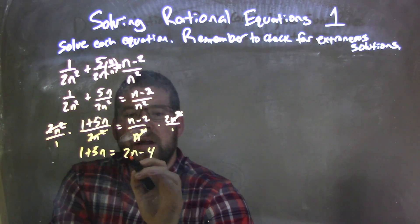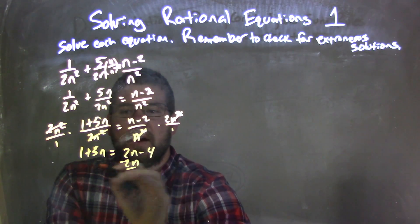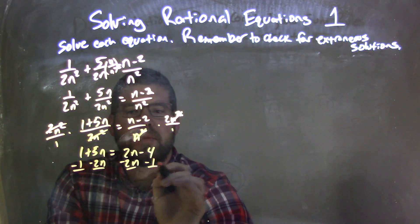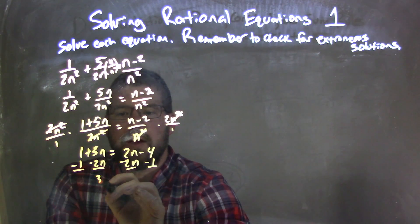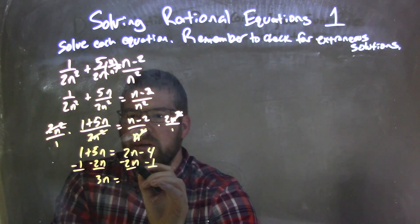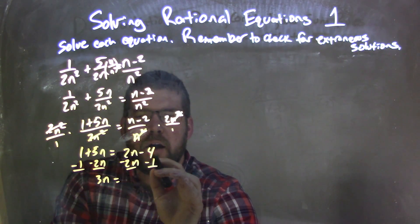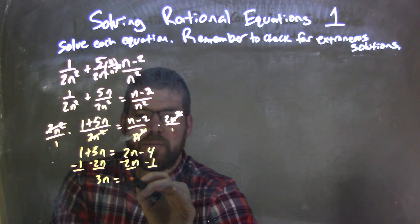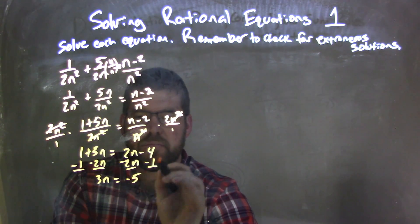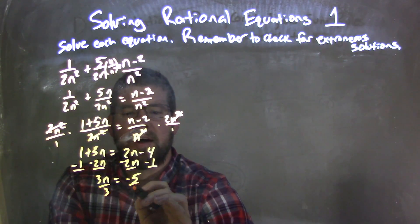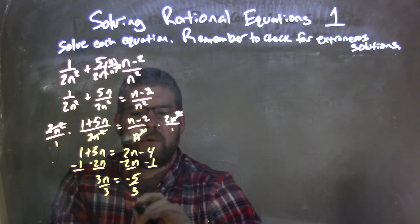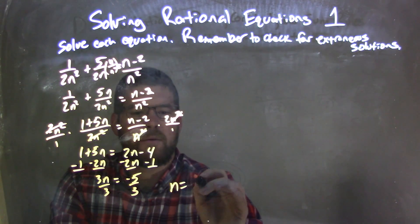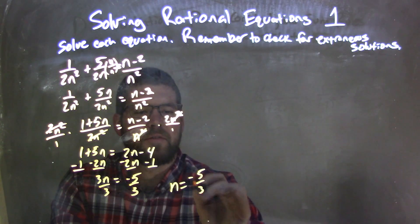Now let's bring our like terms together. I'm going to subtract 2n from both sides and subtract 1 from both sides. That gives me 3n equals negative 4 minus 1, which is negative 5. Then I divide by 3 on both sides, giving me my final answer: n equals negative 5 thirds.